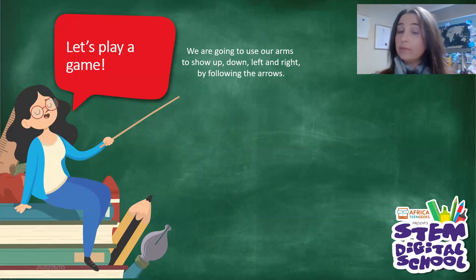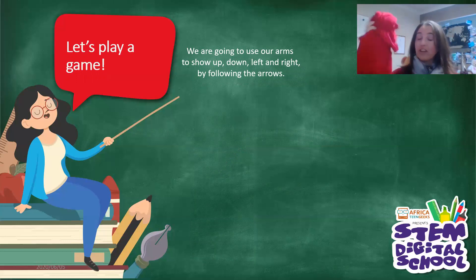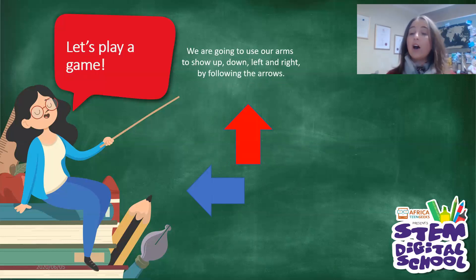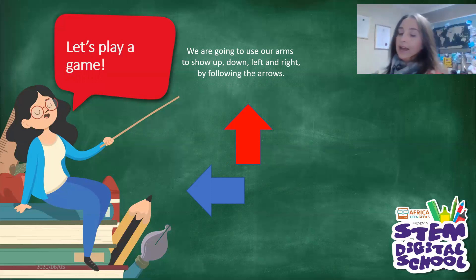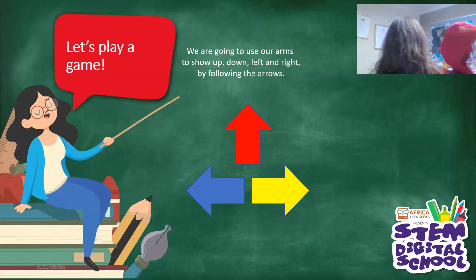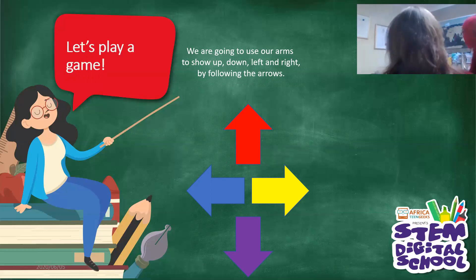Let's use this in our game. We are going to use our arms to show up, down, left and right by following the arrows. I am going to use my red scarf in my right hand to show you how to do this. When we are pointing up, then we are pointing left. Remember, I'm turning so that I'm on the same side as you. Then we are going to go right. Then we are going to point down. So — up, down, left and right.